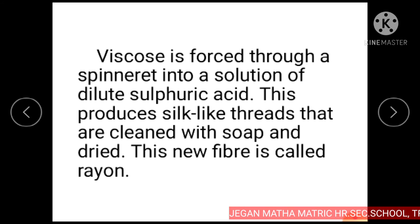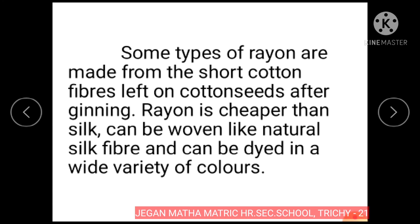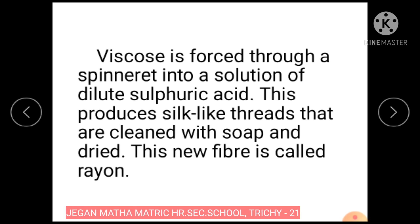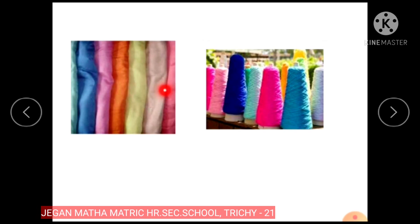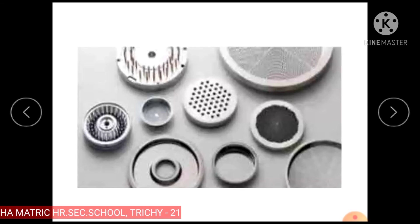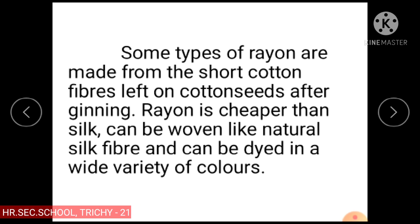The new fiber is called rayon. Some types of rayon are made from the short cotton fibers left on cotton seeds after ginning. Rayon is cheaper than silk, can be woven like natural silk fiber and can be dyed in a wide variety of colors. It can be mixed with cotton to make bedsheets or with wool in the production of carpets and home furnishing products. Rayon is also found in sanitary products, diapers, bandages and gauze for dressing wounds.